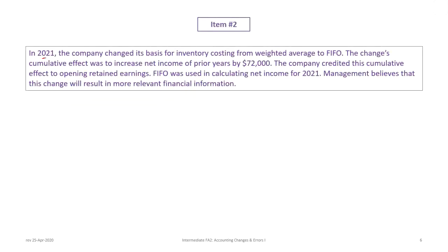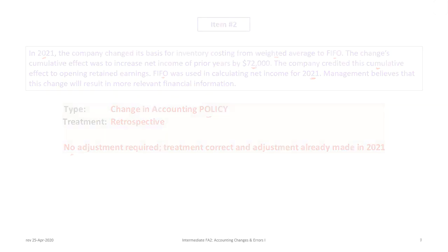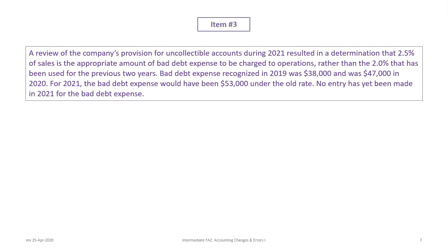For Item 2, in 2021 the company changed its inventory costing basis from weighted average to FIFO. The cumulative effect was to increase net income of prior years by $72,000, and the company credited that cumulative effect to opening retained earnings. FIFO was used in calculating income for 2021 because management believes the change will result in more relevant information. This is a change in accounting policy, the treatment is retrospective — however, no adjustment is required because the treatment was already made correctly.